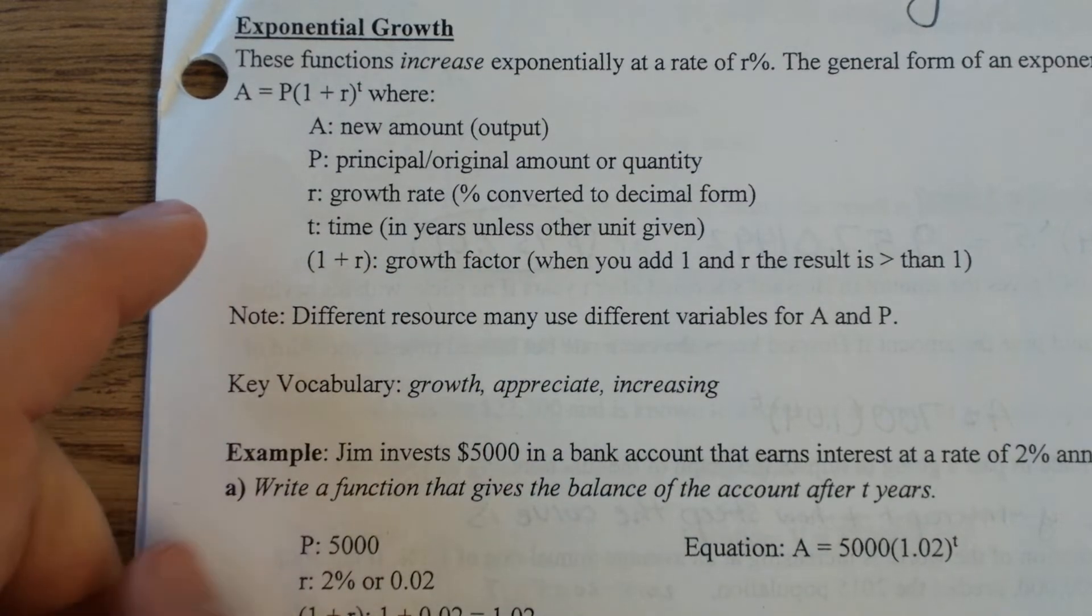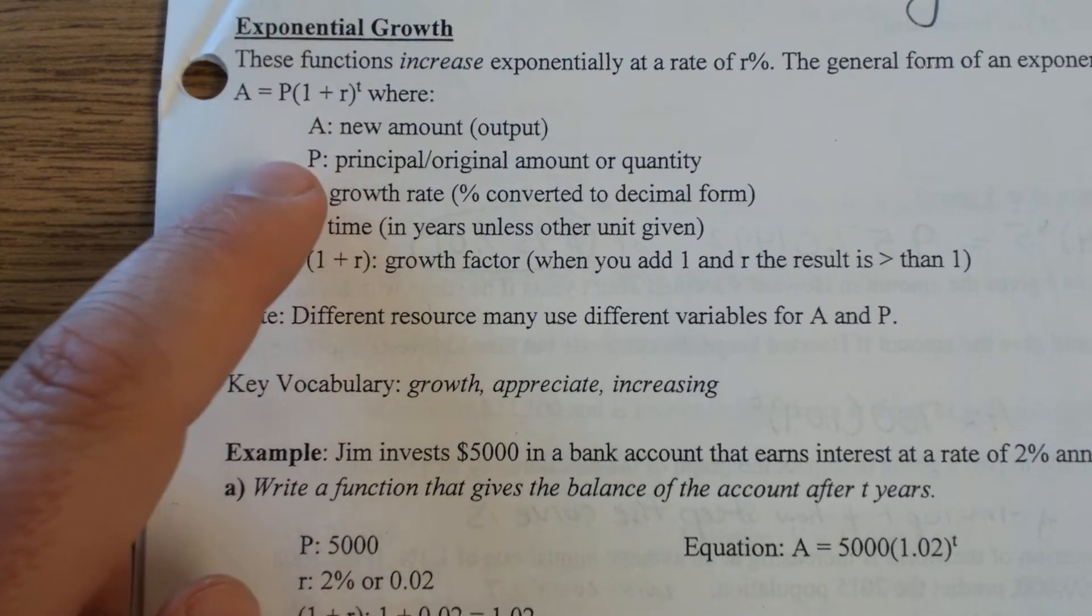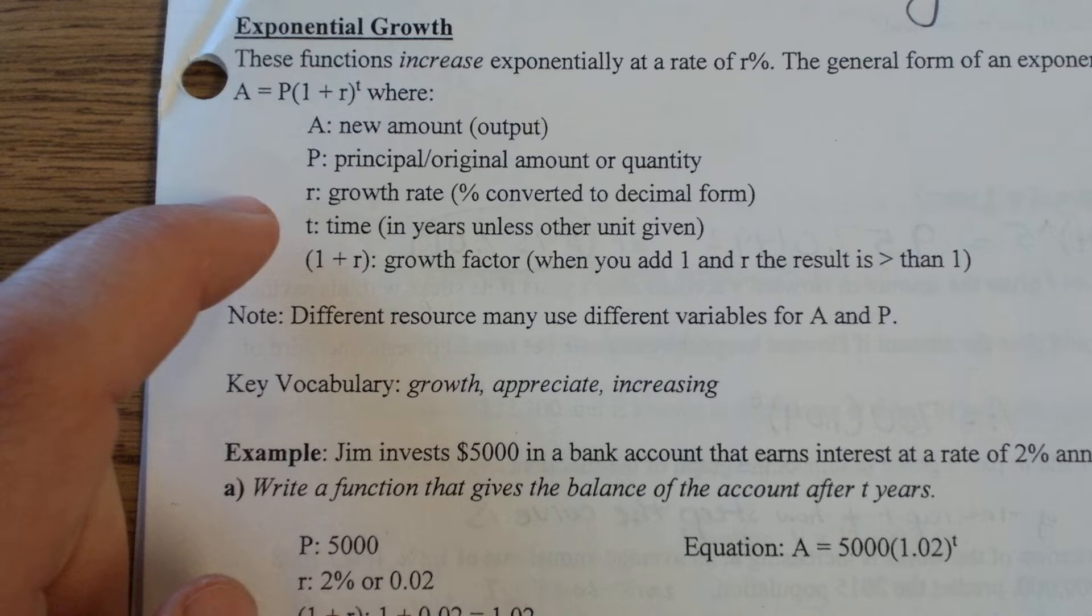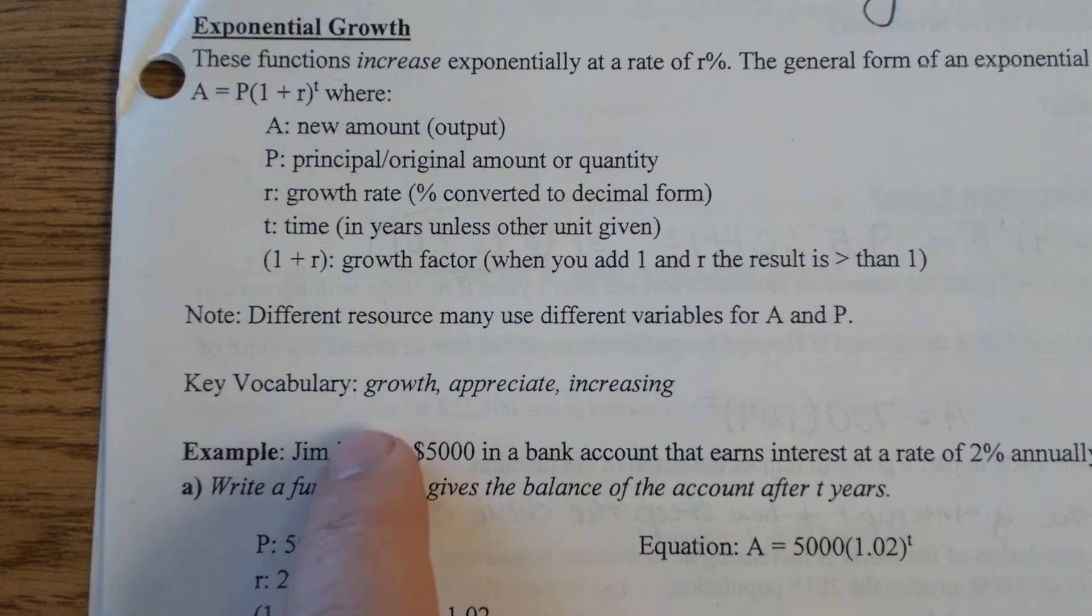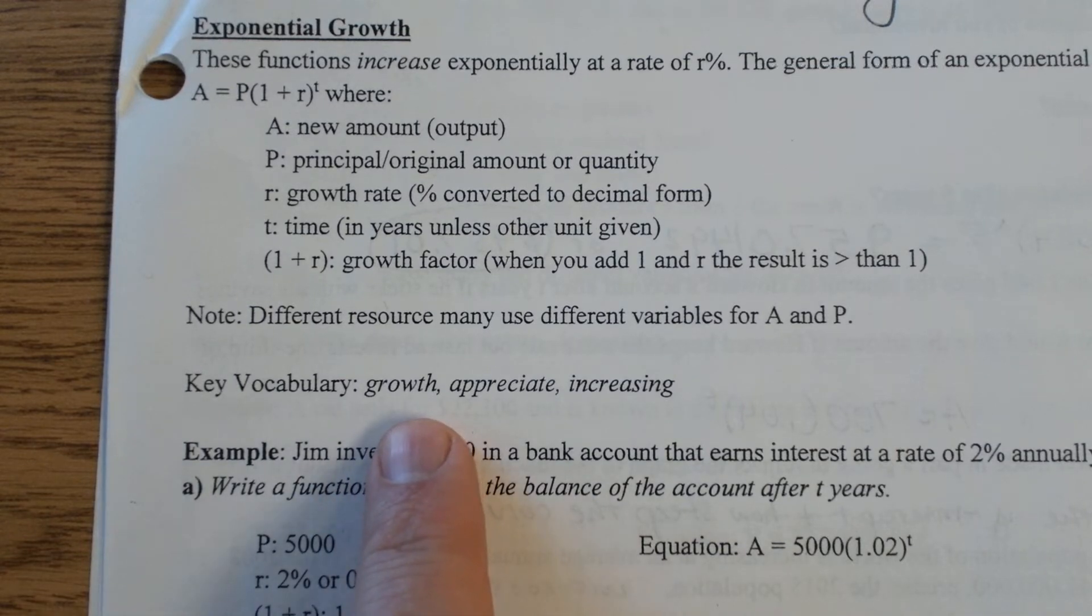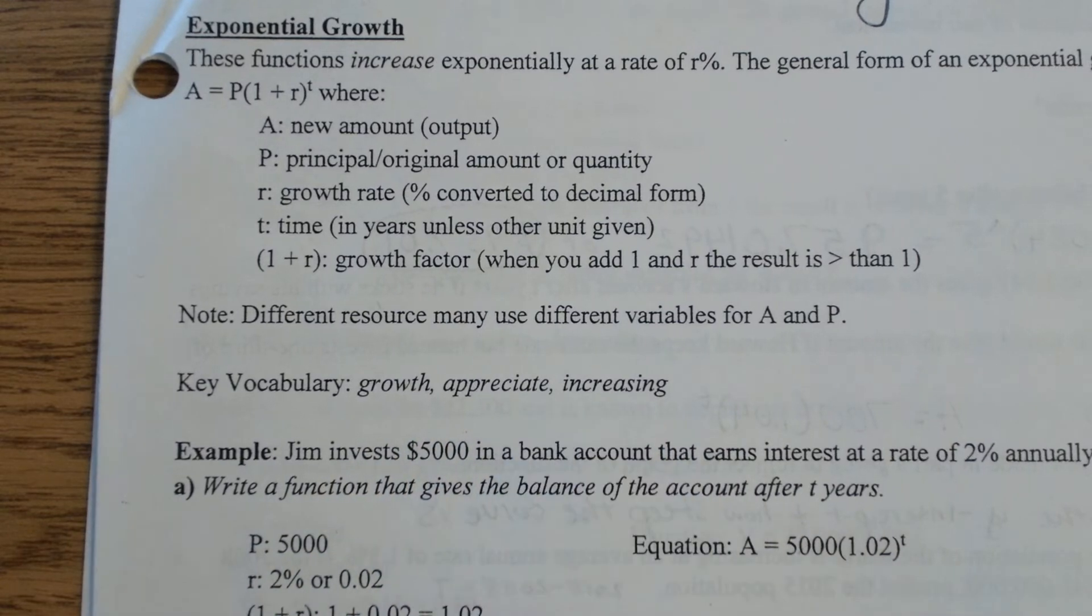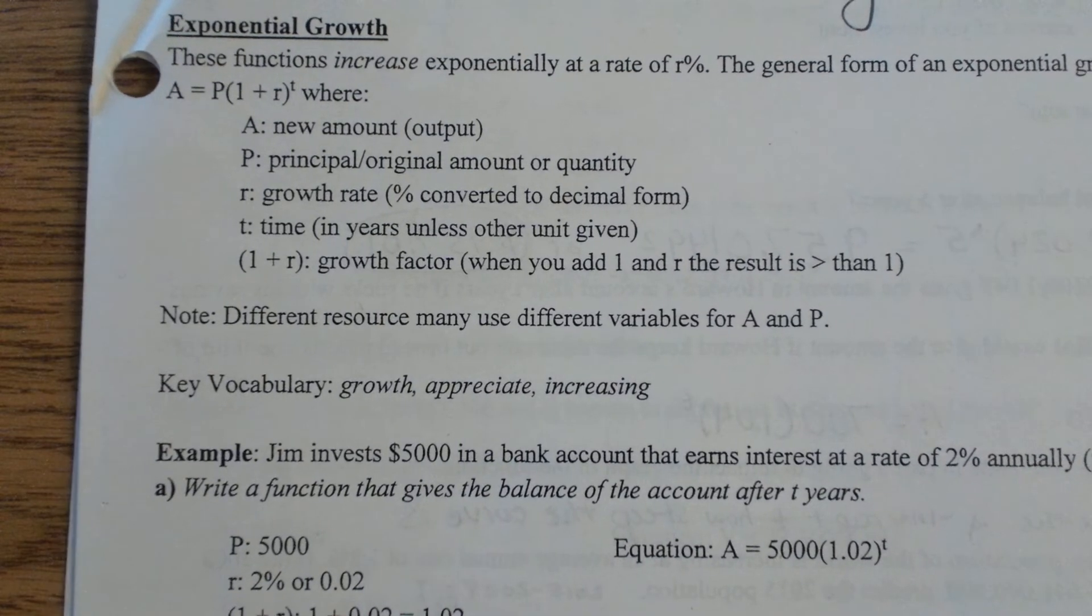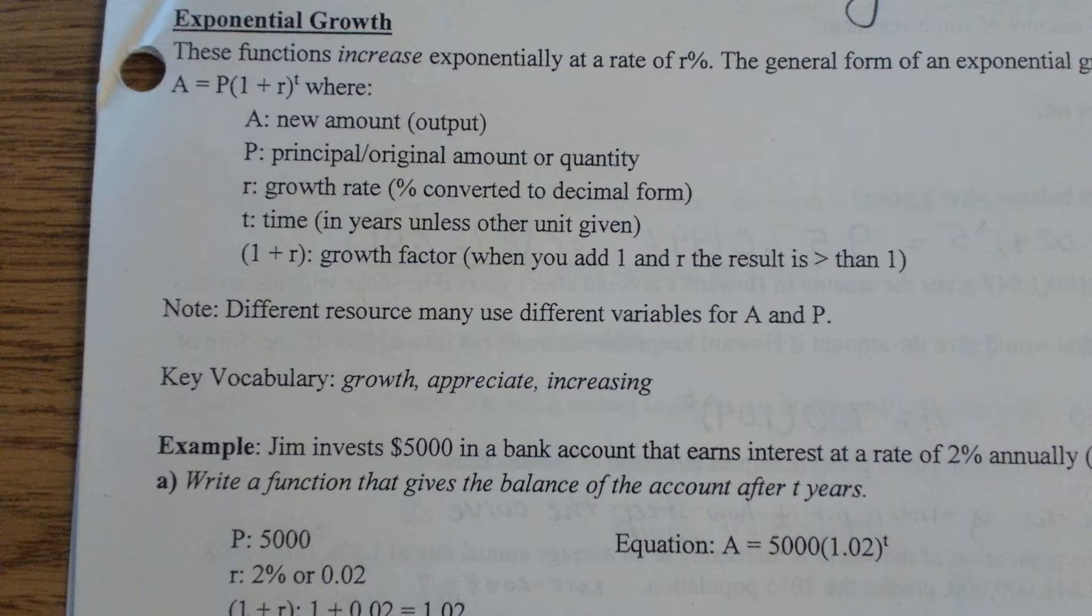And like I said, other textbooks often might have a different variable for A or for P, but we want to be able to recognize the structure more than anything. So key vocabulary terms you'll want to look at with this stuff are growth, appreciation meaning it's getting larger, or increased. That will indicate that it's a growth problem and not a decay.